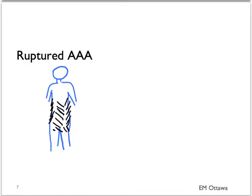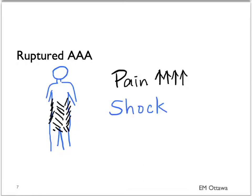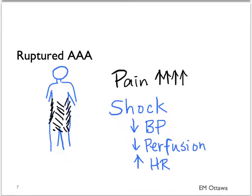When they rupture, the presentation is much more dramatic. The patient may still be complaining of pain in their back and flank area, but now the pain is much more severe and continuous. On examination, the patient is in shock. You will see hypotension, decreasing tissue perfusion, tachycardia, and decreased level of consciousness. The patient with a ruptured AAA is a very sick patient.